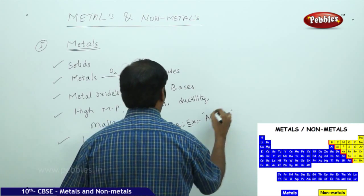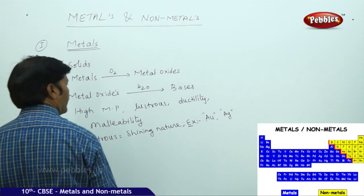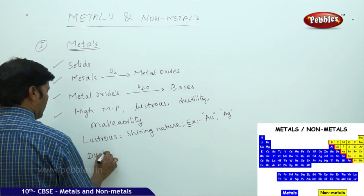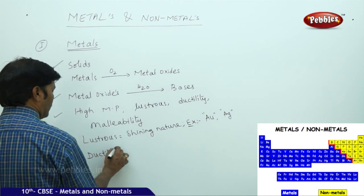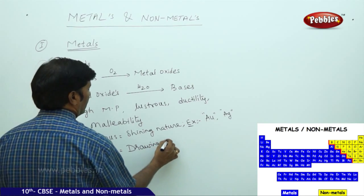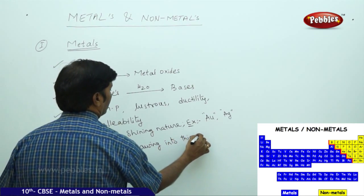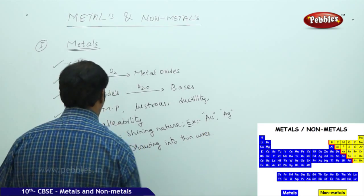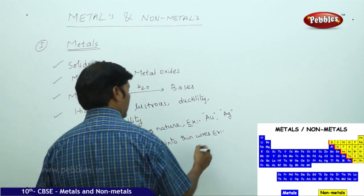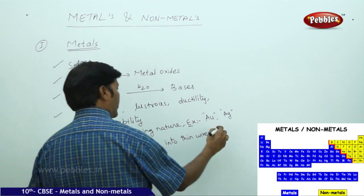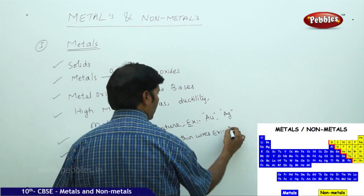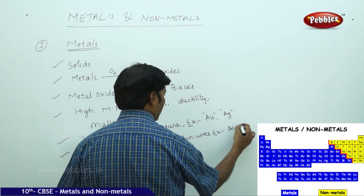If you take ductility, it's drawing into thin wires. For example, you can take any metal which can be drawn into thin threads. Again here, gold and silver.